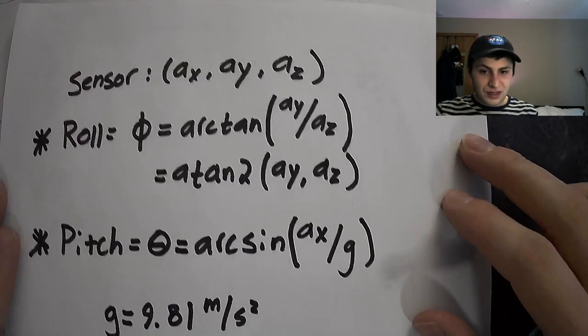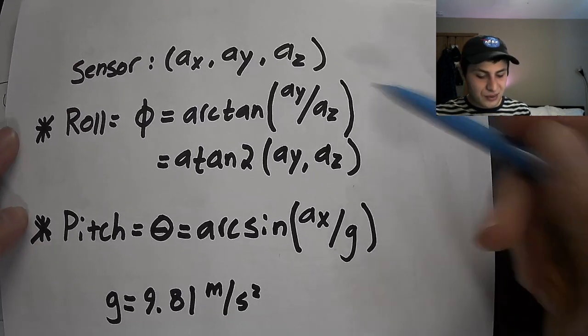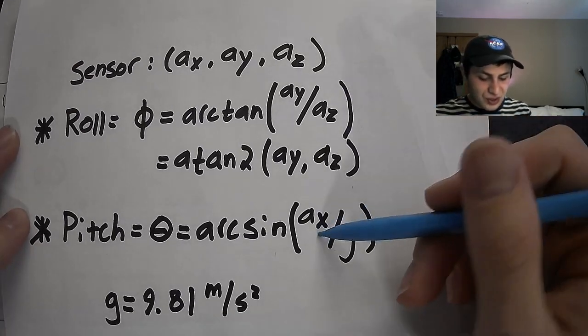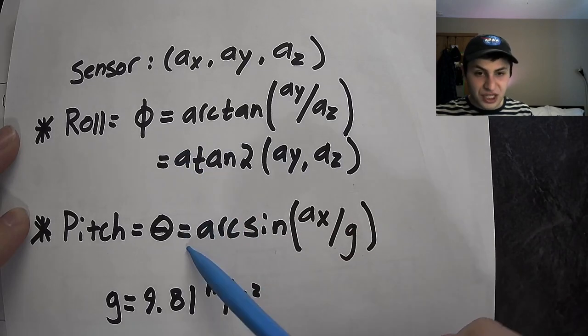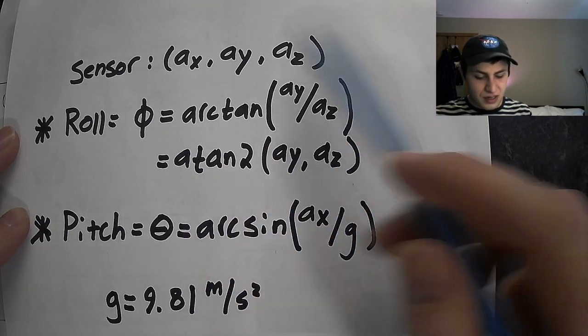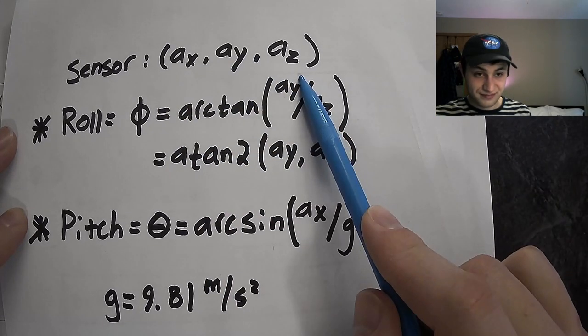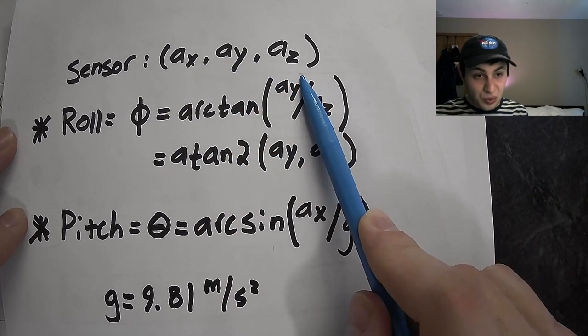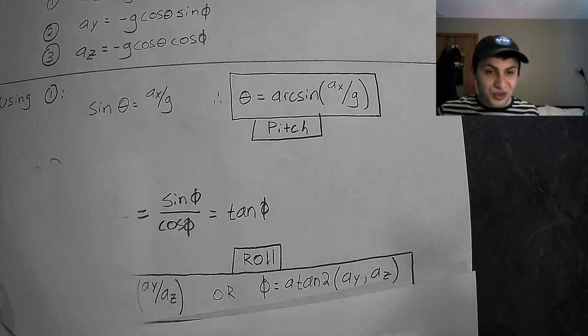These are the math equations we're going to use to compute roll and pitch angles from our accelerometer measurements. Now let's actually show this working on an Arduino.